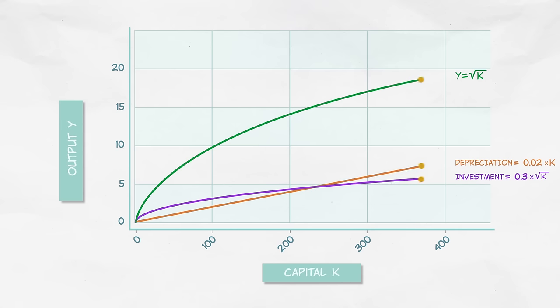Now suppose you ended up on the other side of the steady state point, over here. You'd find that depreciation is greater than investment. That means some of the capital stock needs repair, but there isn't enough investment to do all of the needed repairs. So the capital stock shrinks, pushing you back towards the steady state.